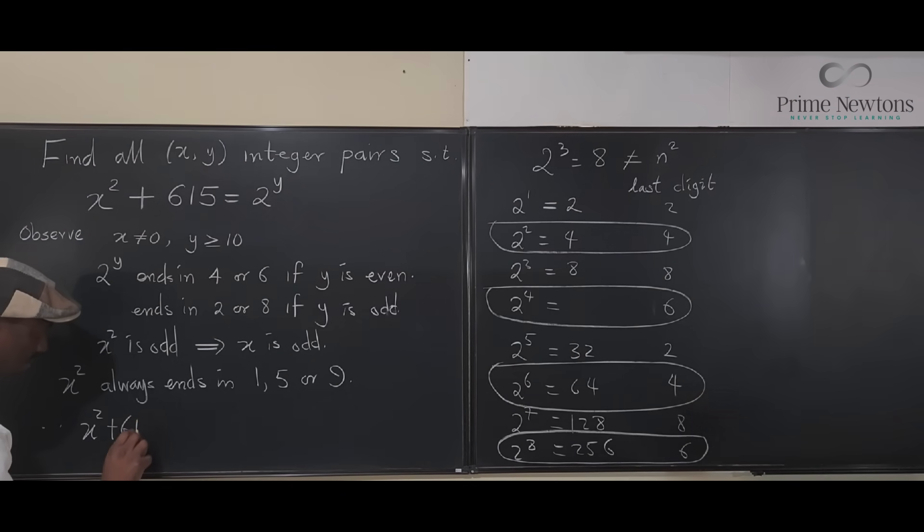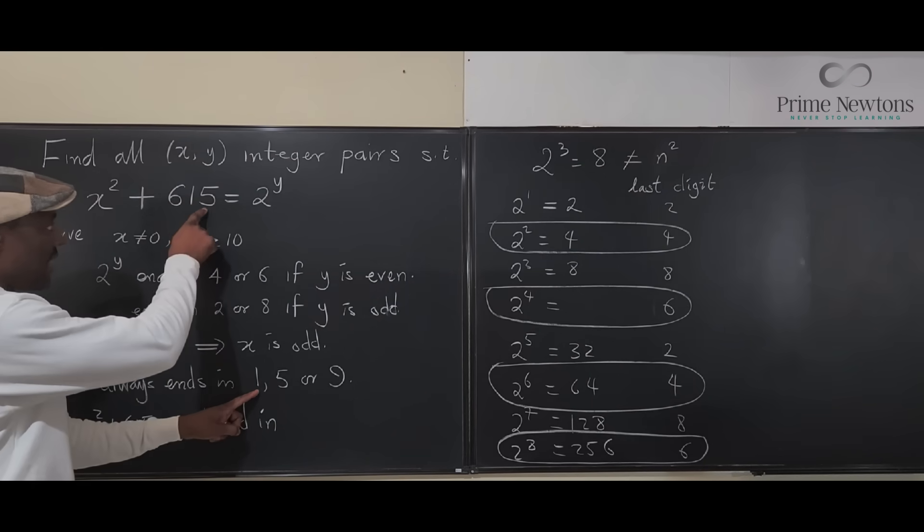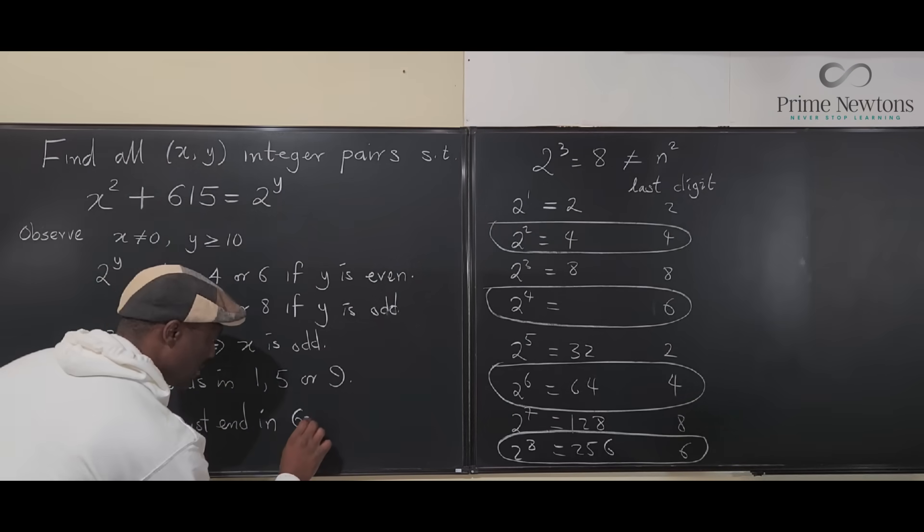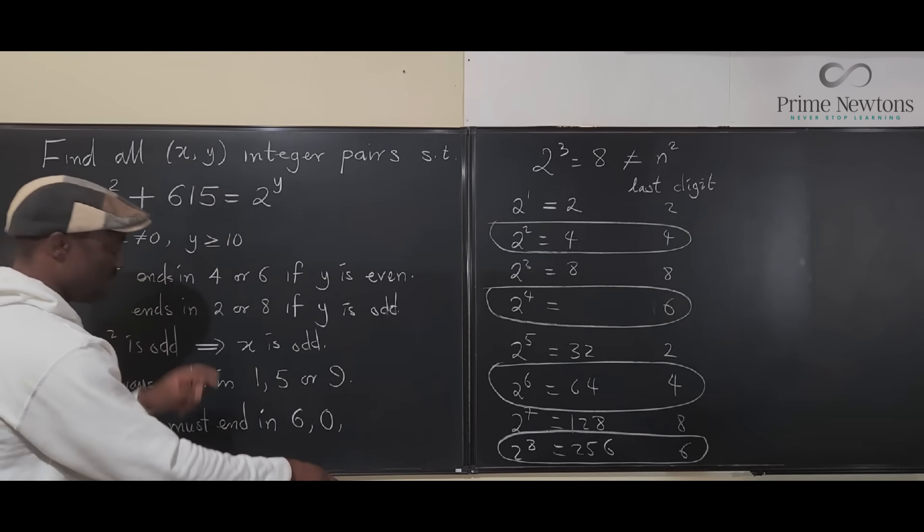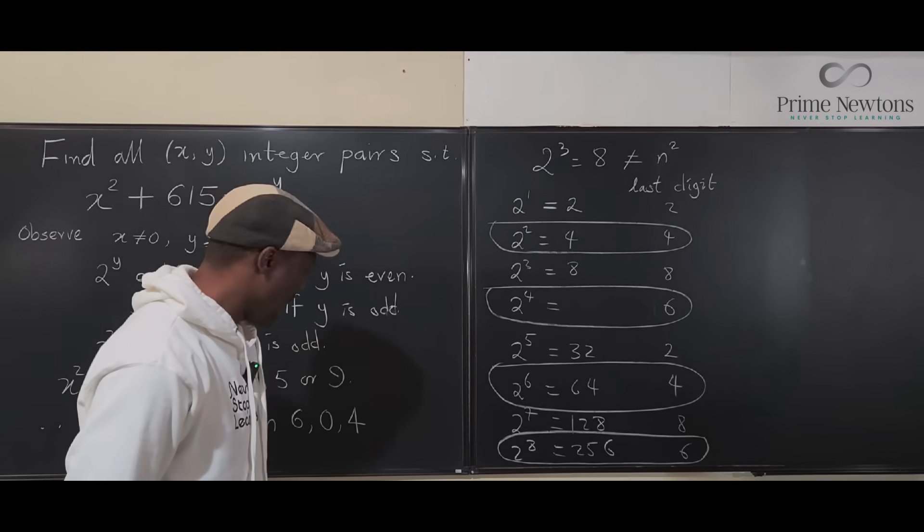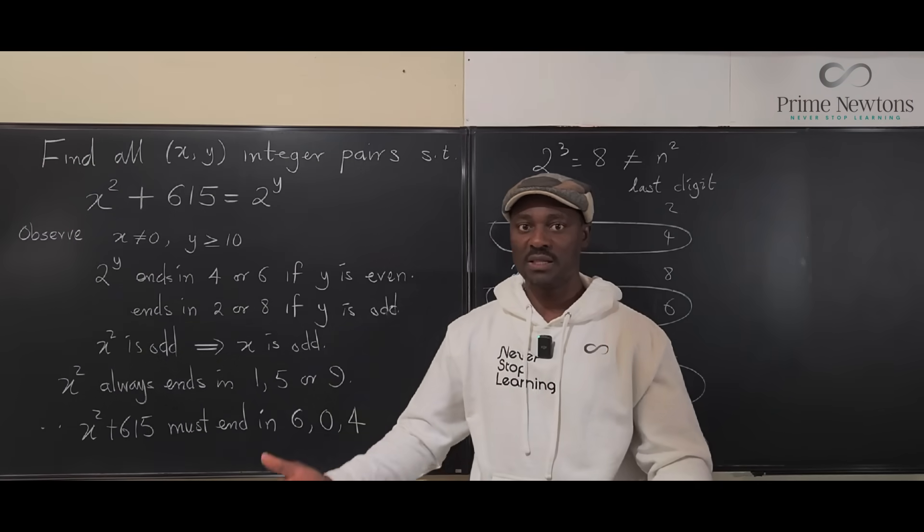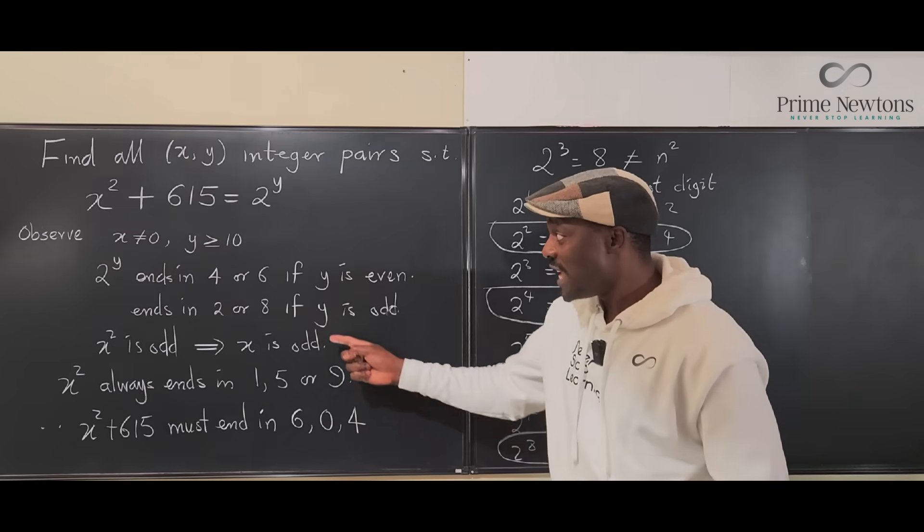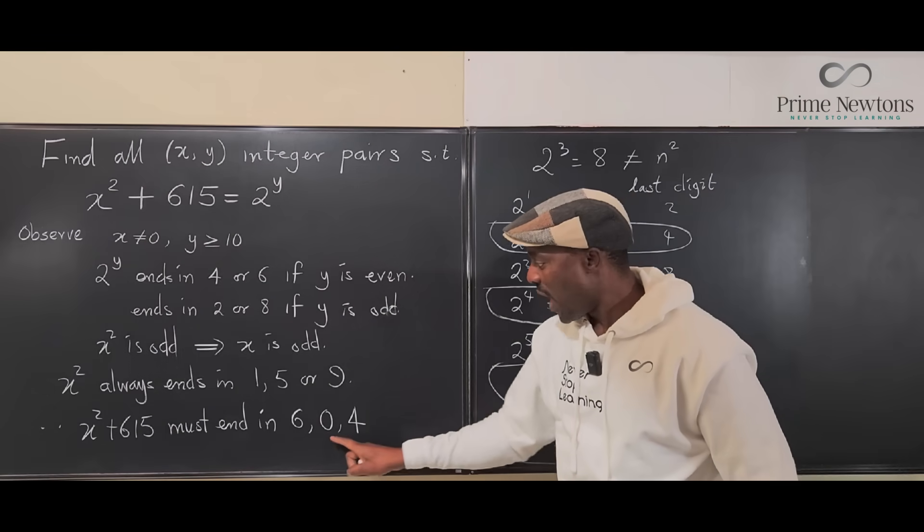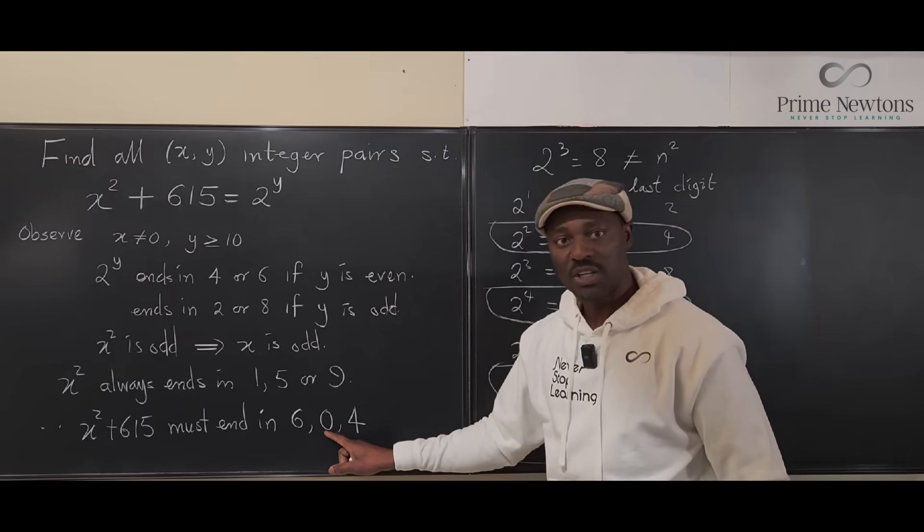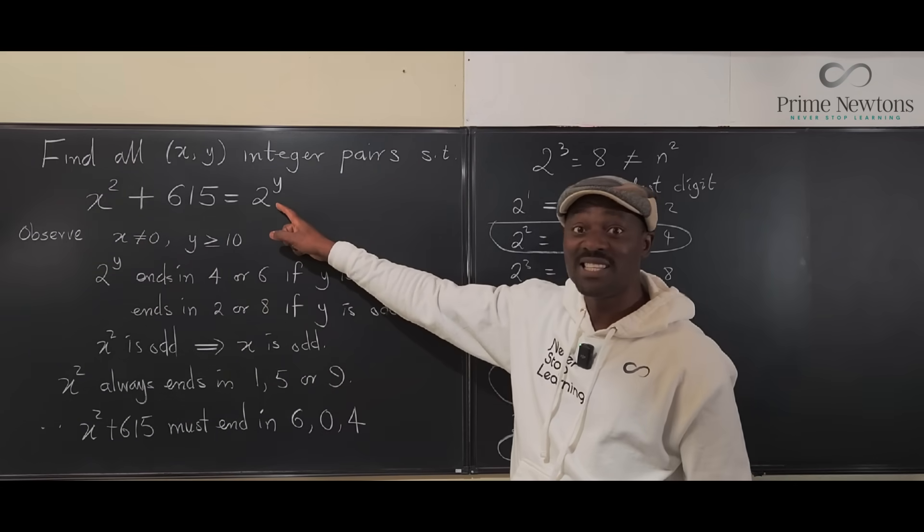So, therefore, x² plus 615 must end in: 1 plus 5, that will be 616, must end in 6. 5 plus 5 will give you 10, which is 0. And then we have 9 plus 5, that's 14, must end in 4. So we have 6, 0, 4. Well, as far as the other side, 0 is not an option for the powers of 2, because there's no power of 2 that ends in 0. So, the only options we have are 6 and 4, which is what we said. 2 to the y will end in 4 or 6 if y is even. Based on what we have, this option is not available to us. 6 and 4 are the only options whenever you add the square of an odd number to 615. So, guaranteed, y is even.